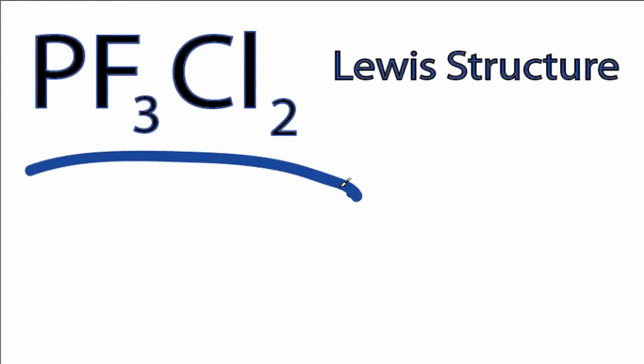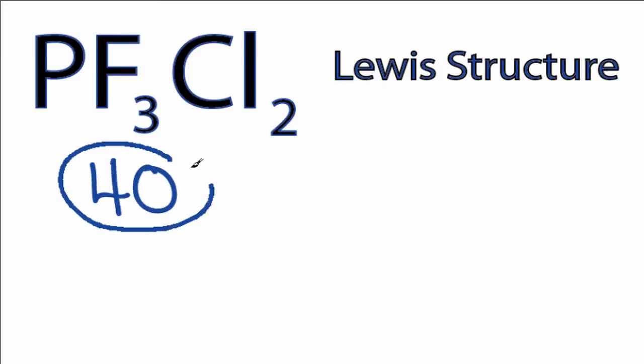This is the PF3Cl2 Lewis structure. For PF3Cl2, we have a total of 40 valence electrons.